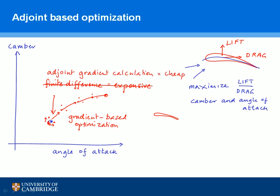This means we can do the same gradient-based optimization as before, but now at every step we require just two calculations: the first is the original calculation to work out the lift over drag, and the second is the adjoint gradient calculation to work out the direction to move. Let me say a little bit more about this adjoint gradient calculation.